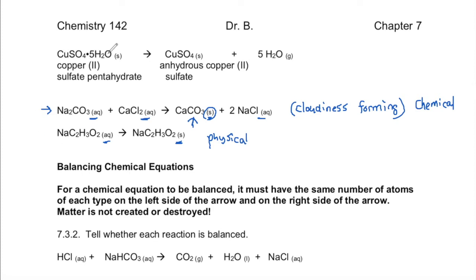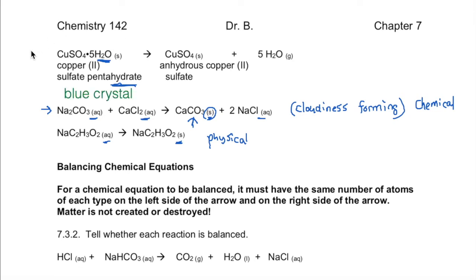I've saved this one for last because I did not talk about hydrates in the main lecture video of chapter 6 — it was in one of the supplemental videos. This is all a solid. Even though you see water as part of the chemical formula, that is the hydrate part of the formula. This is a solid crystal that has water molecules inside it. What this looks like are some blue solid crystals — it does not look like something dissolved in water. It is a solid — blue crystals — copper sulfate pentahydrate.